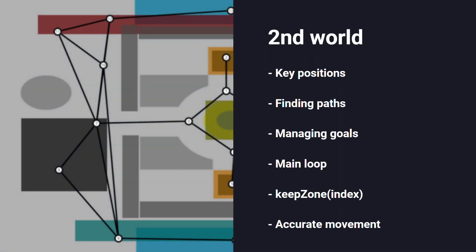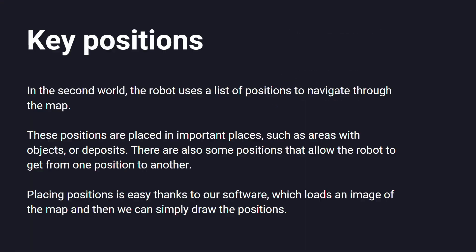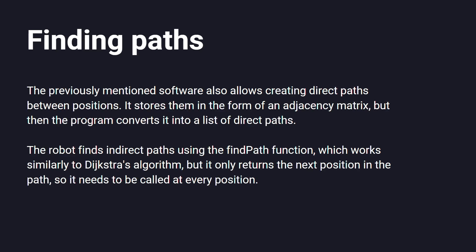The second world also has some unique features. The first one is Key Positions, which is a collection of places where the robot knows it can go. These positions have direct paths between them, and when there is no direct path, it finds the shortest path composed of those direct paths.